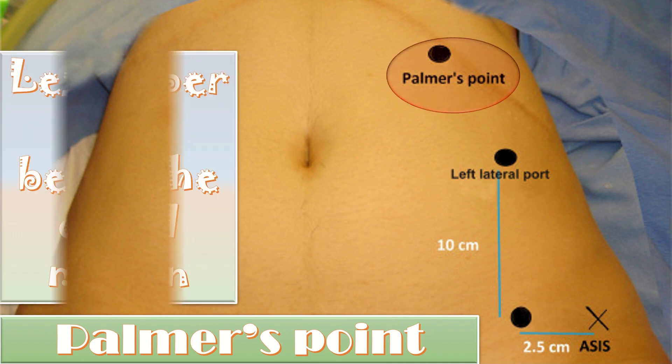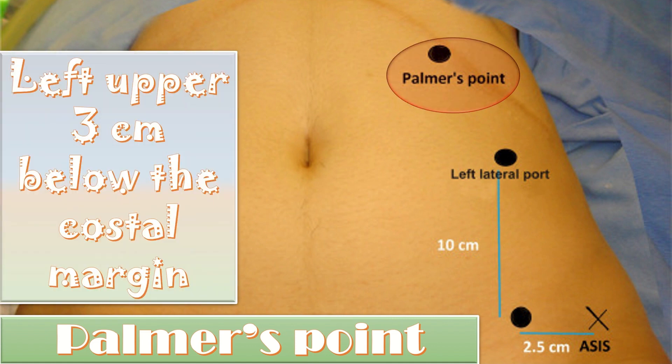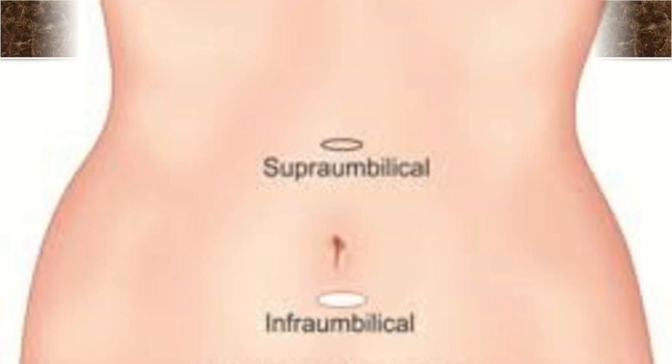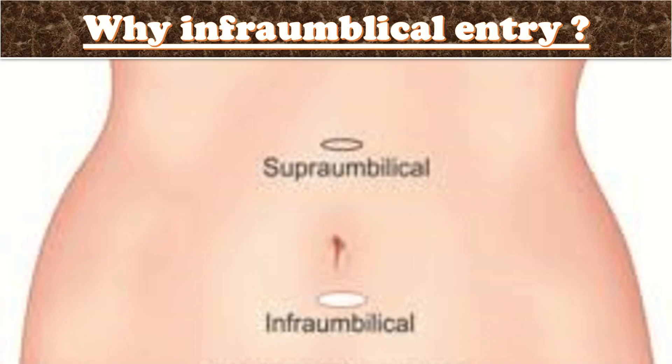Palmer's point — 3 cm above the left costal margin — is a preferred alternative for trocar insertion, except in cases of previous surgery in that area. The infraumbilical area is preferred as an entry point due to fixed peritoneum, thin and least vascular area, and for cosmetic purposes.